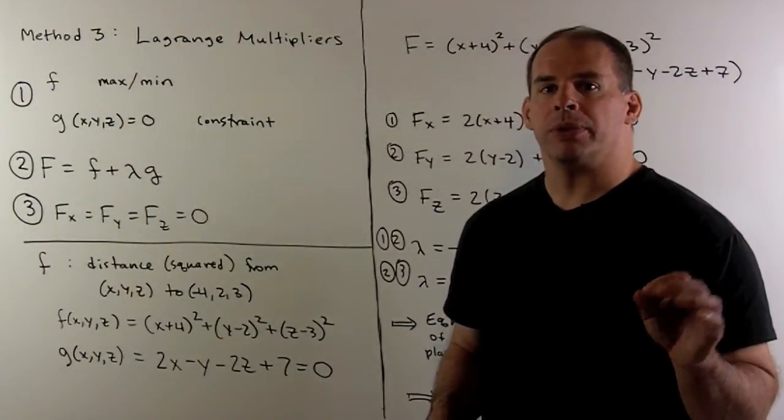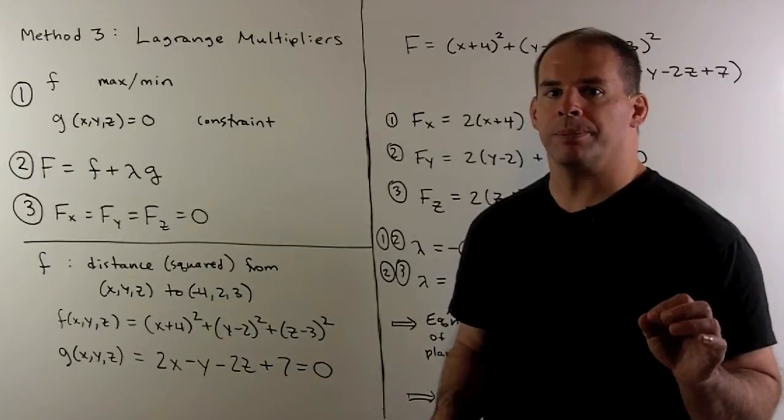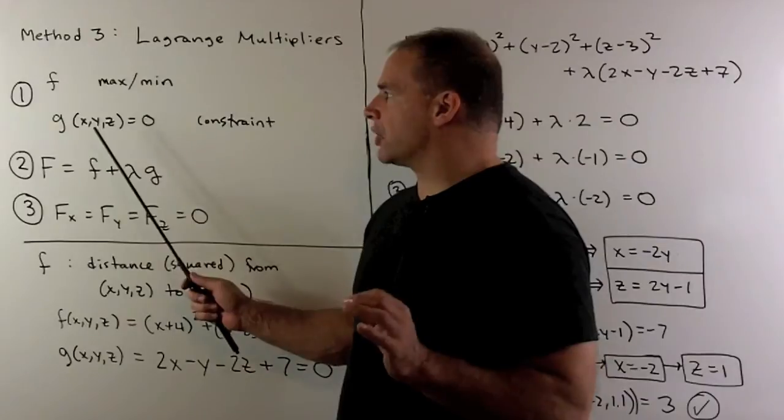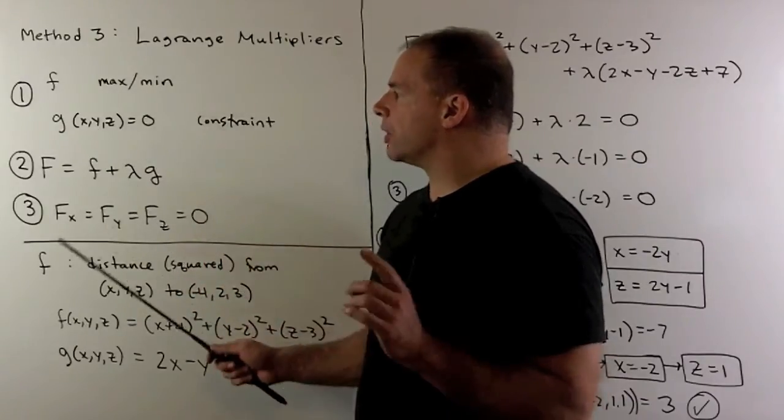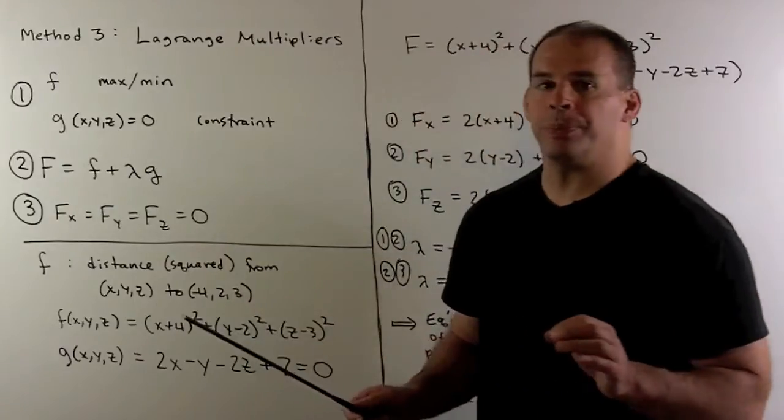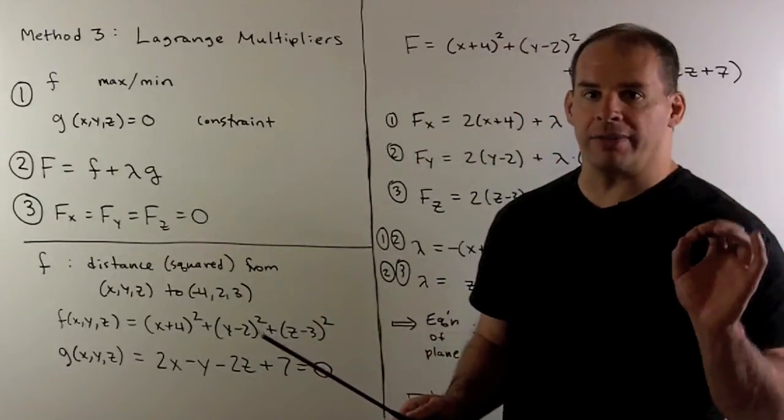For our third method, we use Lagrange multipliers. We have f as a function I'm going to maximize or minimize on some space defined by g equal to zero. So, g is going to be our constraint function.